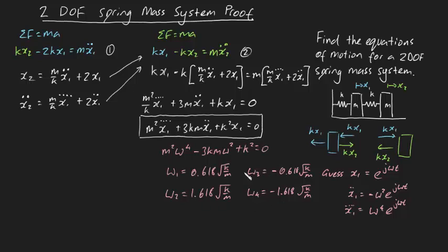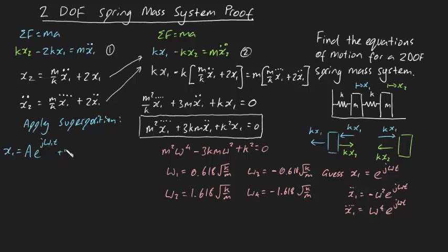We've got four roots for omega. Applying superposition, we can generate a generalized equation for x1: x1 = A e^(jω₁t) + B e^(jω₂t) + C e^(jω₃t) + D e^(jω₄t). This is our generalized expression for x1, though it's not very pretty — let's see if we can simplify it.